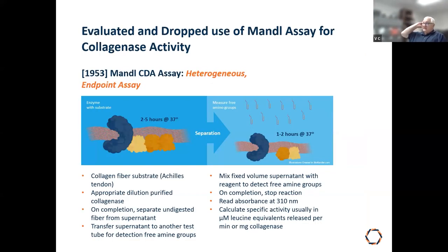Francis Dwella did all the protein chemistry for LIBERASE HI and evaluated but ultimately dropped use of the Mandel assay — a common assay still used by Sigma-Worthington. In that assay, you use a collagen fiber substrate, apply the collagenase, separate undigested fiber from supernatant, and measure release of free amino groups. We couldn't get this to work reproducibly in the mid-90s.